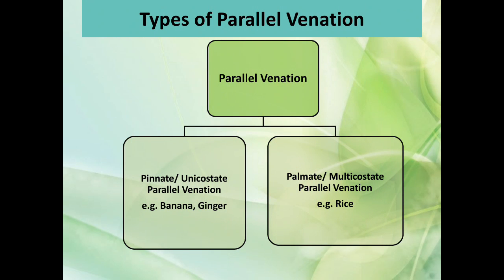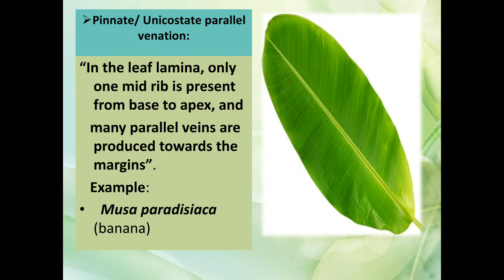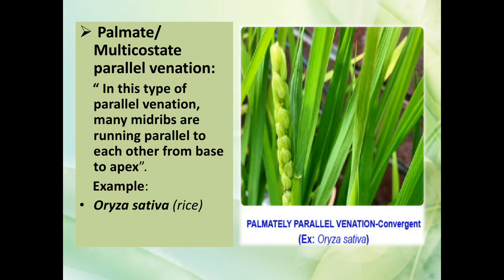Types of parallel venation: parallel venation has two types. First, unicostate parallel venation — for example, banana and ginger. Second, palmate or multicostate parallel venation — for example, in rice. In unicostate parallel venation, only one midrib is present from base to apex, and many parallel veins are produced toward the margins. In palmate multicostate parallel venation, many midribs run parallel to each other from base to apex.